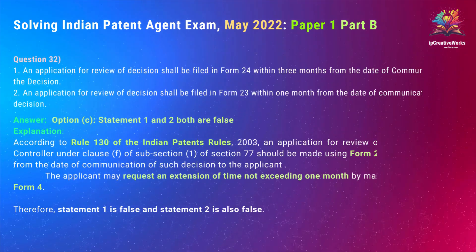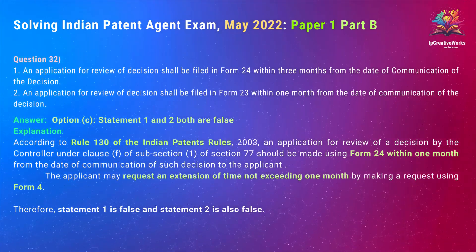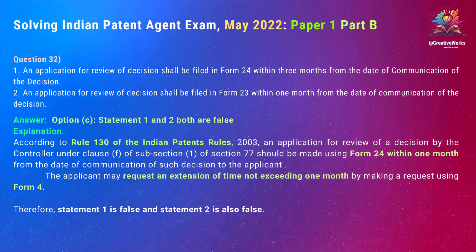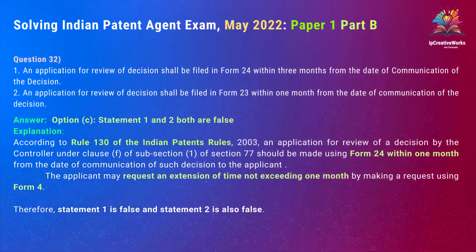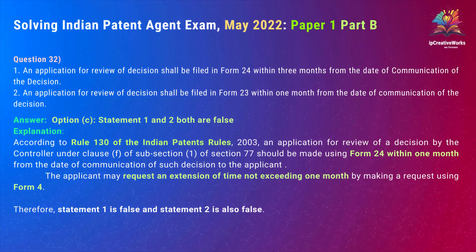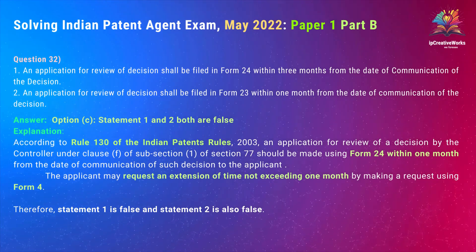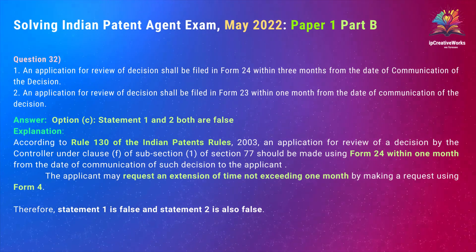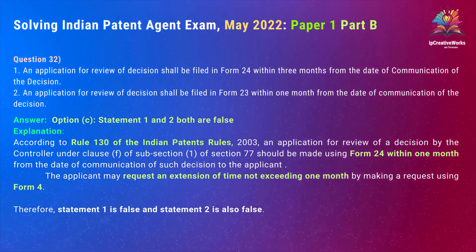Question 32. Statement 1: An application for review of decision shall be filed in Form 24 within three months from the date of communication of the decision. Statement 2: An application for review of decision shall be filed in Form 23 within one month from the date of communication of the decision. The correct answer to Question 32 is Option C — Statement 1 and 2 both are false.